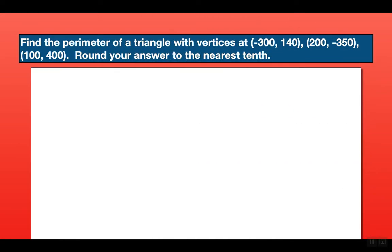Find the perimeter of a triangle with vertices at (-300, 140), (200, -350), and (100, 400). Round your answer to the nearest tenth. First, you're given no picture for this problem — I highly recommend you sketch one out, it'll make it much easier to visualize. You could use the distance formula without a picture but it's much more difficult. So let's sketch a quick rough picture of where these points are — it doesn't have to be perfect, you don't have to be Picasso.